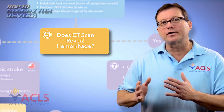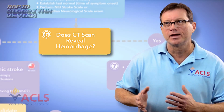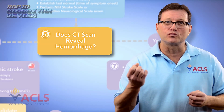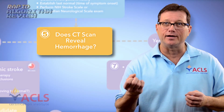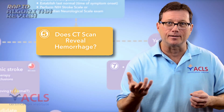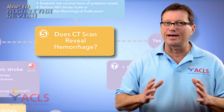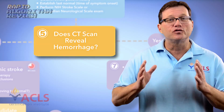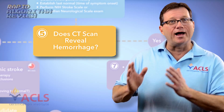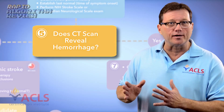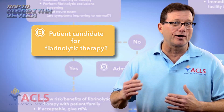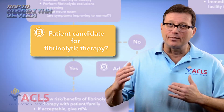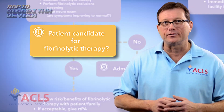The other category is hemorrhagic stroke — in this case, a blood vessel has ruptured in the brain and it's bleeding. That's why it's so important to get that CAT scan as quickly as possible to rule out a hemorrhagic event, because if we administer fibrinolytic therapy in a hemorrhagic event, that would be fatal to the patient.